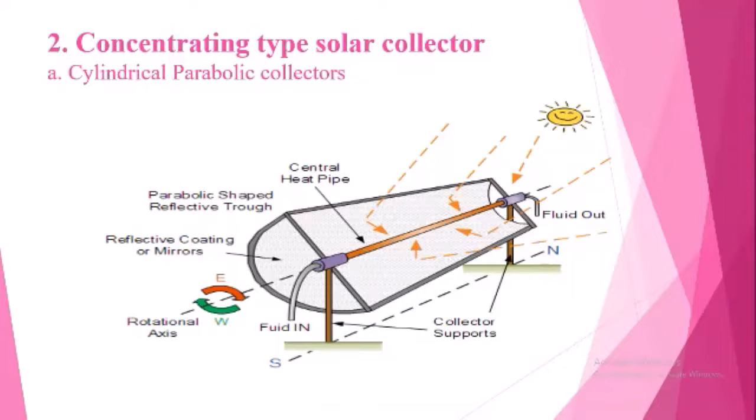This type is line focusing type parabolic collectors. The cross section of the parabolic trough collector reflector is shown here. In this type of collector, the solar radiations falling on the parabolic reflector are concentrated at the focus of the parabola.